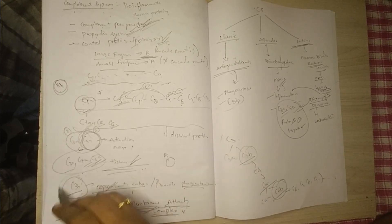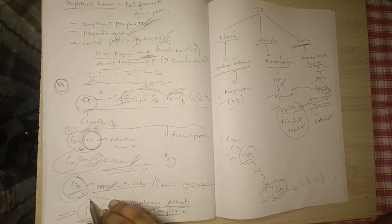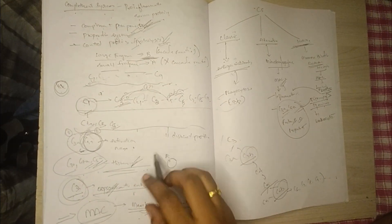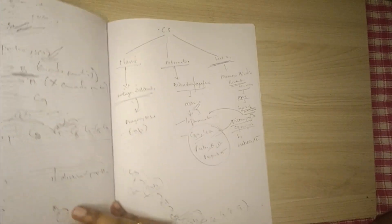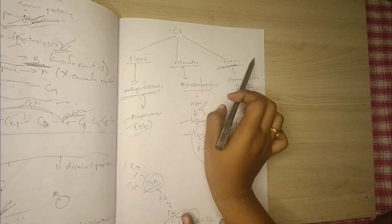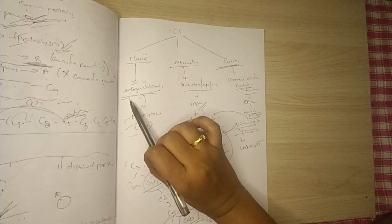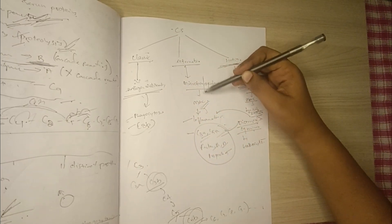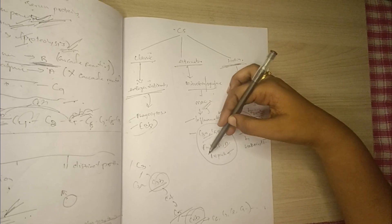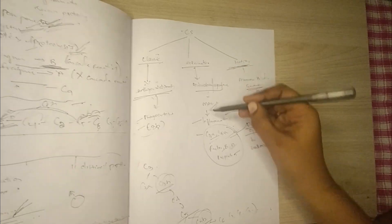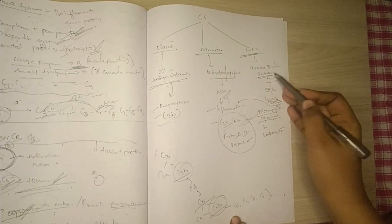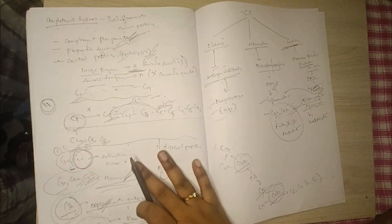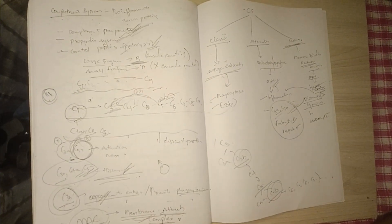C3b acts as a convertase, helping generate C5a and also aiding in opsonization and phagocytosis. All complement components ultimately lead to formation of the MAC complex. The classic pathway uses antigen-antibody interaction to drive phagocytosis via C3b; the alternate pathway ruptures microbial surfaces via C3a, C5a, Factor B, Factor D, and properdin to form MAC; the lectin pathway uses mannose binding to lectin to form MAC and lyse the microbe. This is all we need to know about the complement system.